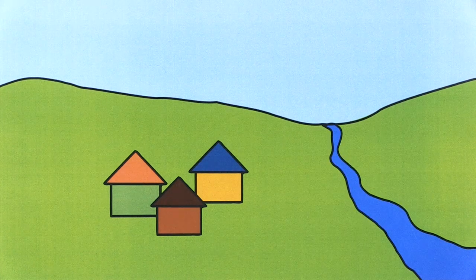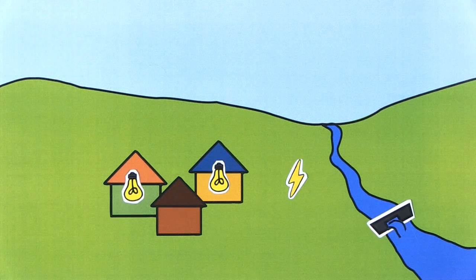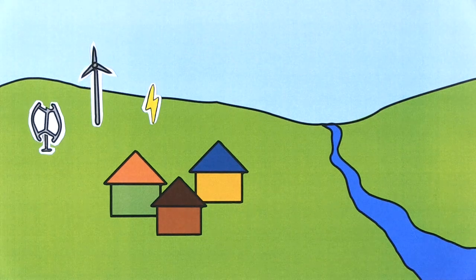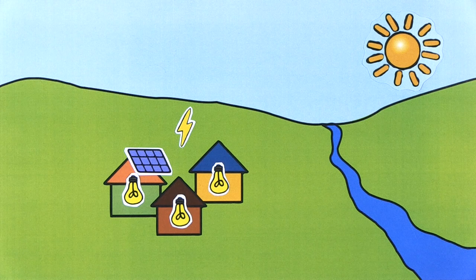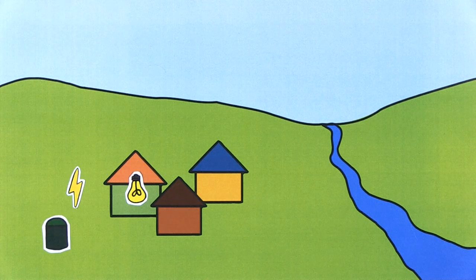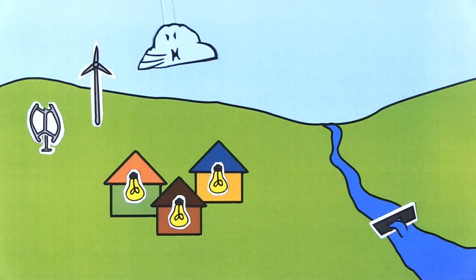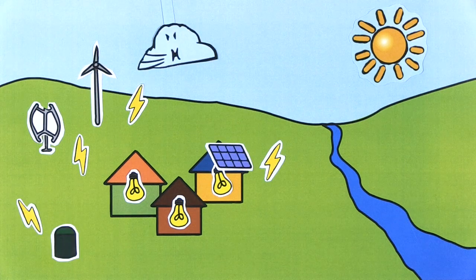There are four main ways to generate distributed renewable electricity: small hydropower that respects the ecology of rivers, small wind power, solar photovoltaics, and small biomass systems using human and agricultural waste or wood gas technology. Or a combination of those — the so-called hybrid systems.